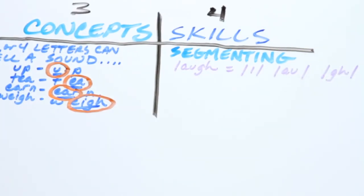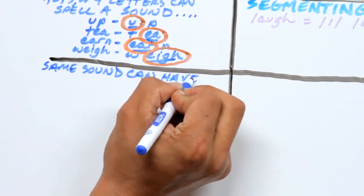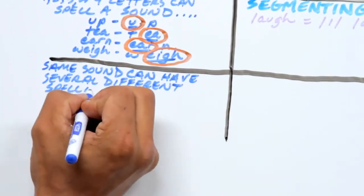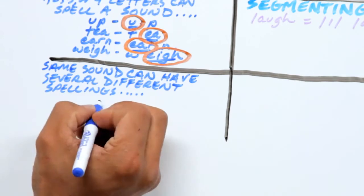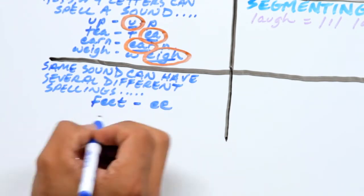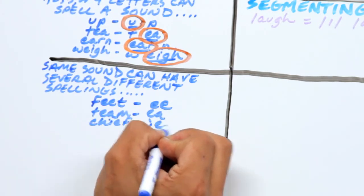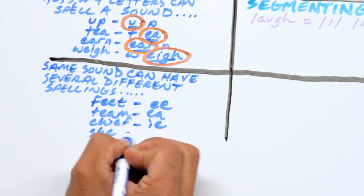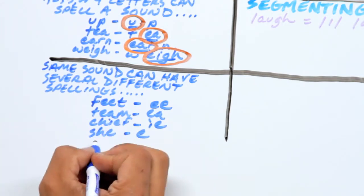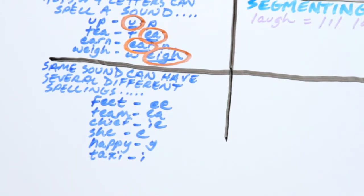The second Eblee concept is, in the English language, the same sound can have several different spellings. For example, the sound e is spelled ee in feet, ea in team, ie in chief, e in she, y in happy, and i in taxi.